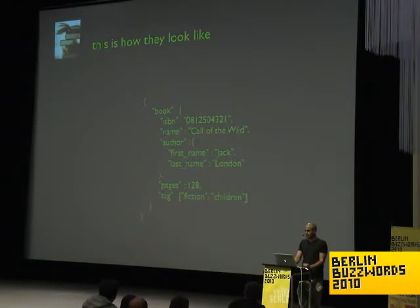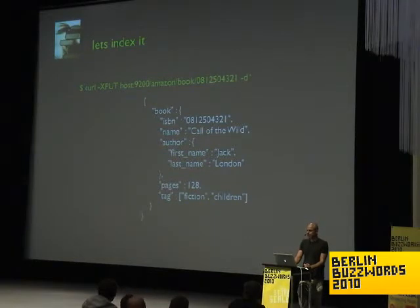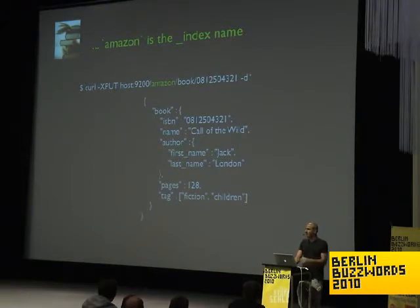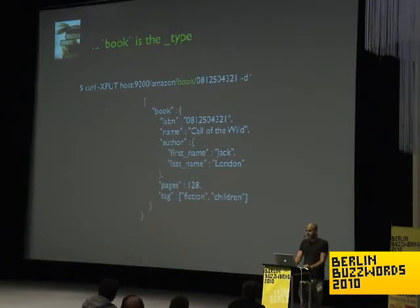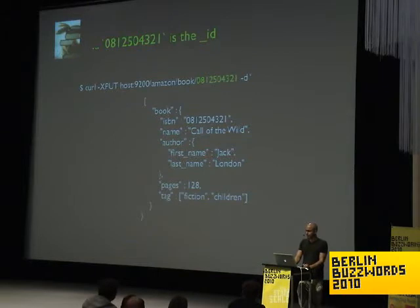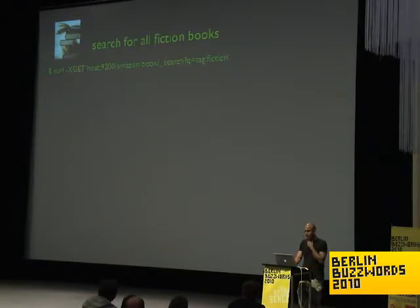The first thing that we have with an Amazon store are books. A book has an ISBN and a name, the author that wrote it, how many pages, and some tagging information. Let's take that book and index it into Elasticsearch — that's very simple. You just curl it using HTTP. You index it into an index in Elasticsearch called Amazon — think of an index like a database. The book is the type; think of it like a database table. And you give it the ID; in our case, we reuse the ISBN number.